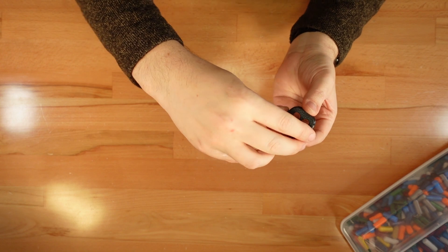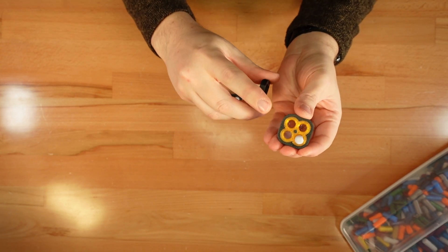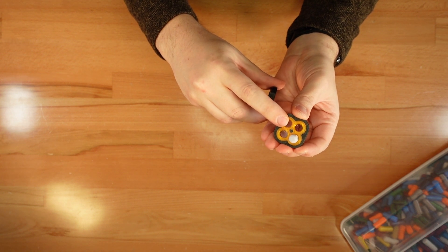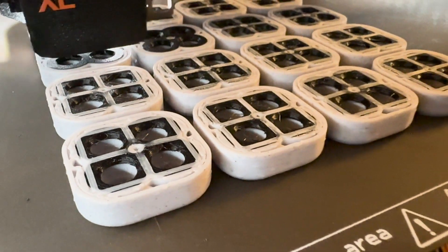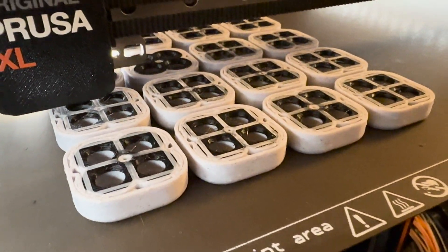Just pause the print right before the case begins to close up and insert a pre-printed TPU gasket. Once you resume the print, the next layer will cleanly bridge over the TPU and lock it into place.